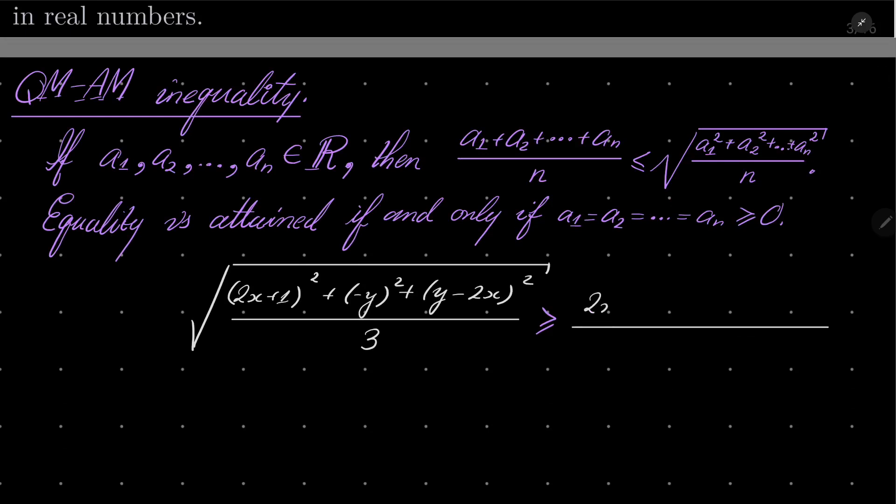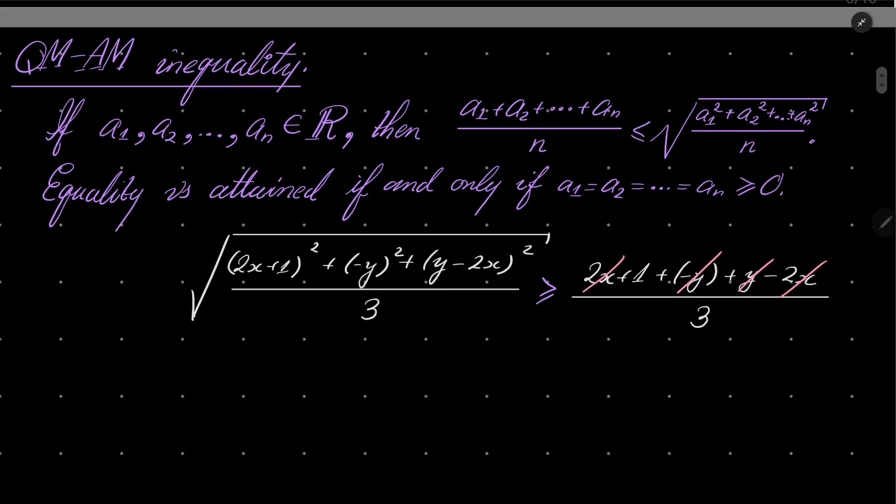(2x + 1) plus (2x + 1) plus (-y) plus (y - 2x) over 3. And now the magic happens: 2x and -2x are gone, +1 and -1 are gone, +y and -y are gone, so we have 1 over 3.